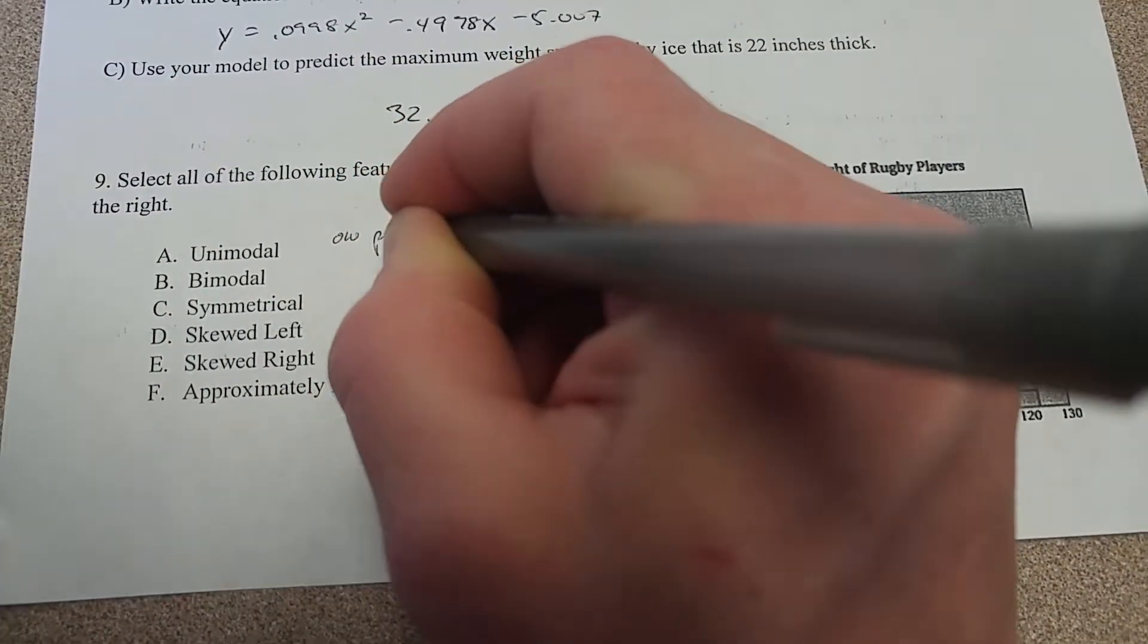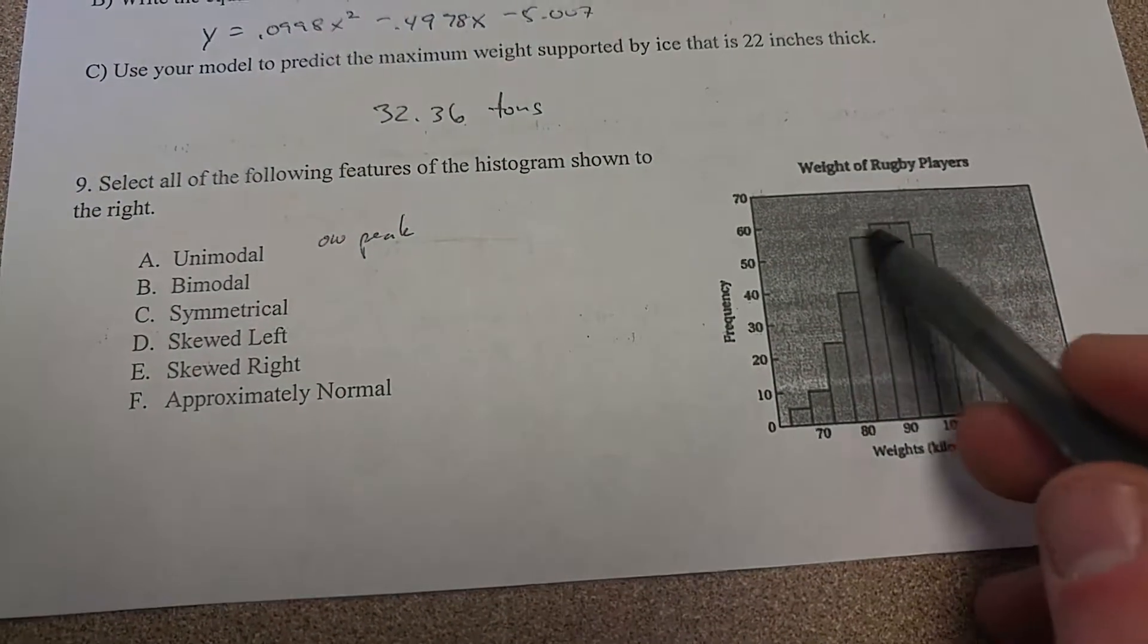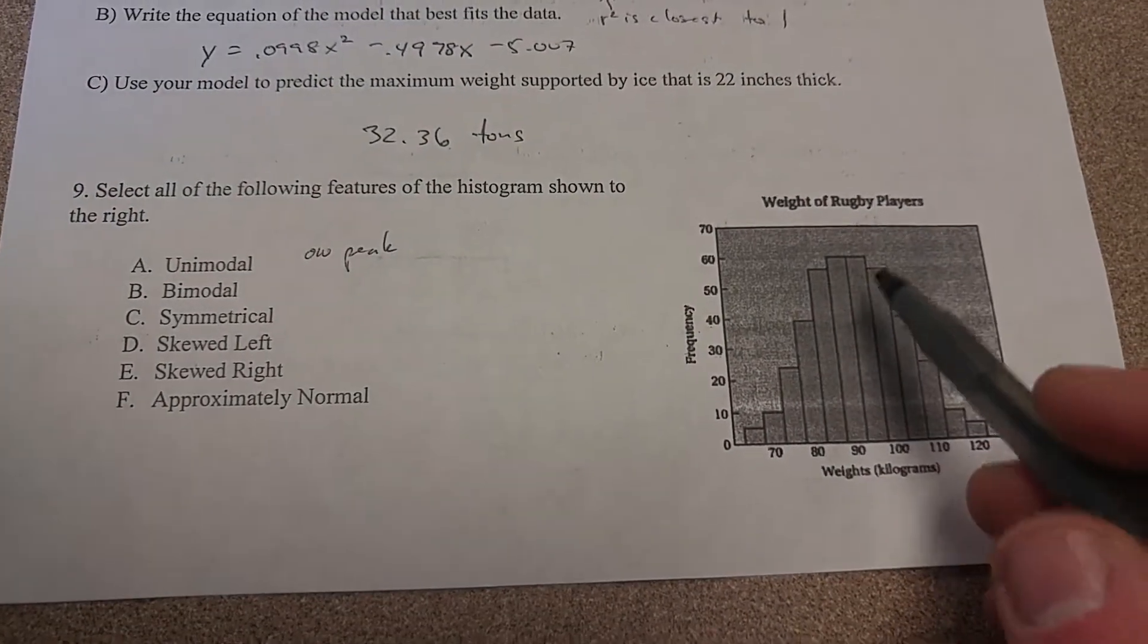Unimodal means that there is one peak. It does not mean that there is only one bar at the top. It means that there is a single peak.